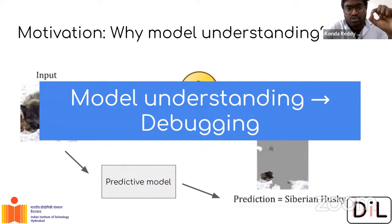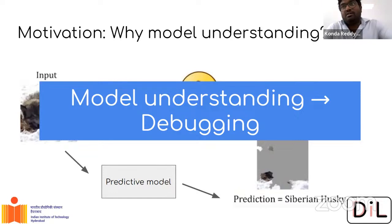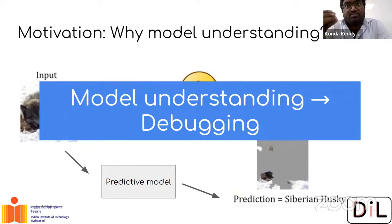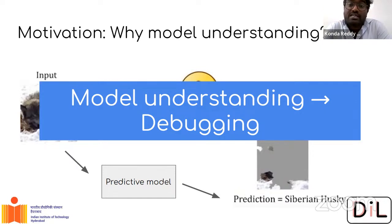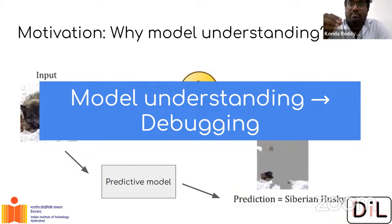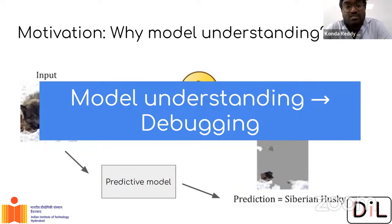One would expect the model to learn what makes something a Siberian husky — the fur, the color, the facial features. That would be more reasonable. But the model picked up on snow in the images. This is one use case of model understanding: you can debug models to see whether they learned something meaningful or are just learning on irrelevant correlations in the dataset. Model understanding, explanation, interpretability — all these terms are interchangeable and boil down to making the AI model explain its decision.